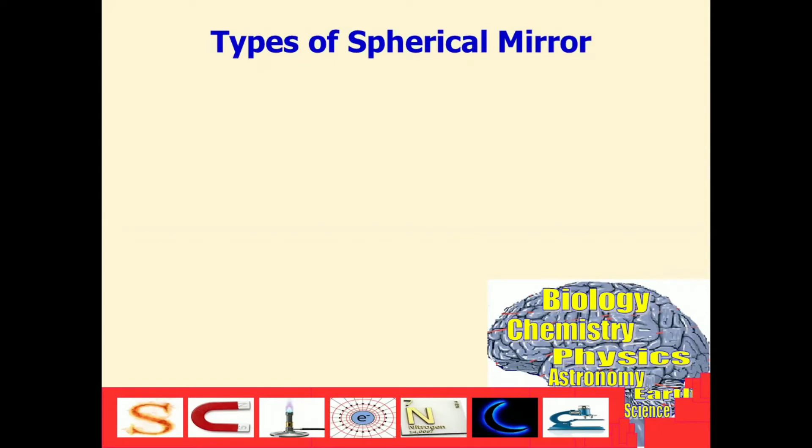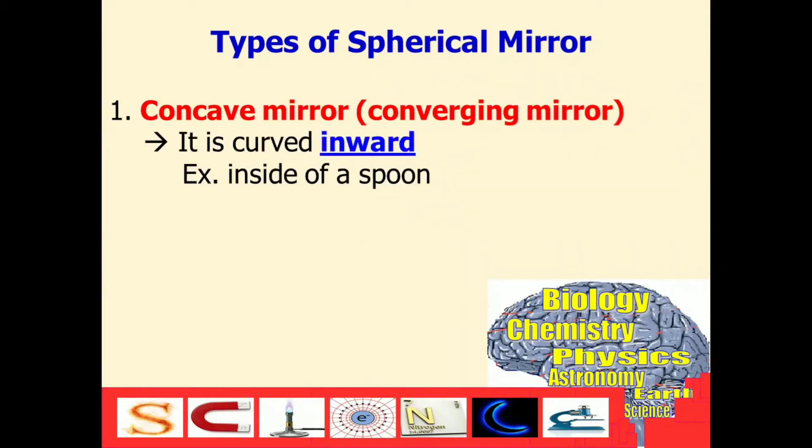We have two types of spherical mirror. The first one is the concave mirror, also known as converging mirror. You have to remember that it has an inward curve. For you to visualize it, the best example is the inside of a spoon.